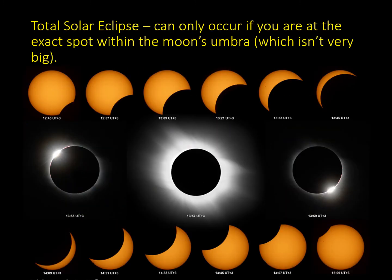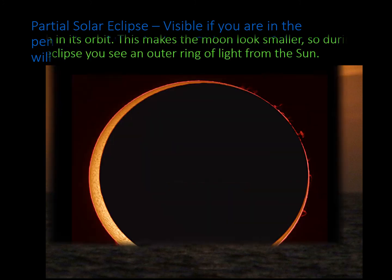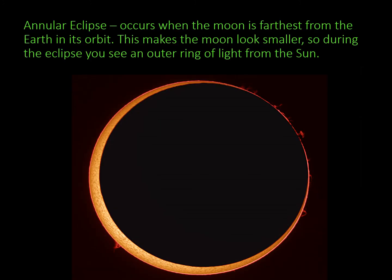This is the image of a total solar eclipse — it can only occur if you are at the exact spot within the moon's umbra. A partial solar eclipse is visible if you are in the penumbra of the shadow, where only some of the sun is covered. An annular eclipse occurs when the moon is farthest from the earth in its orbit, making the moon look smaller, so during the eclipse you see an outer ring of light from the sun.